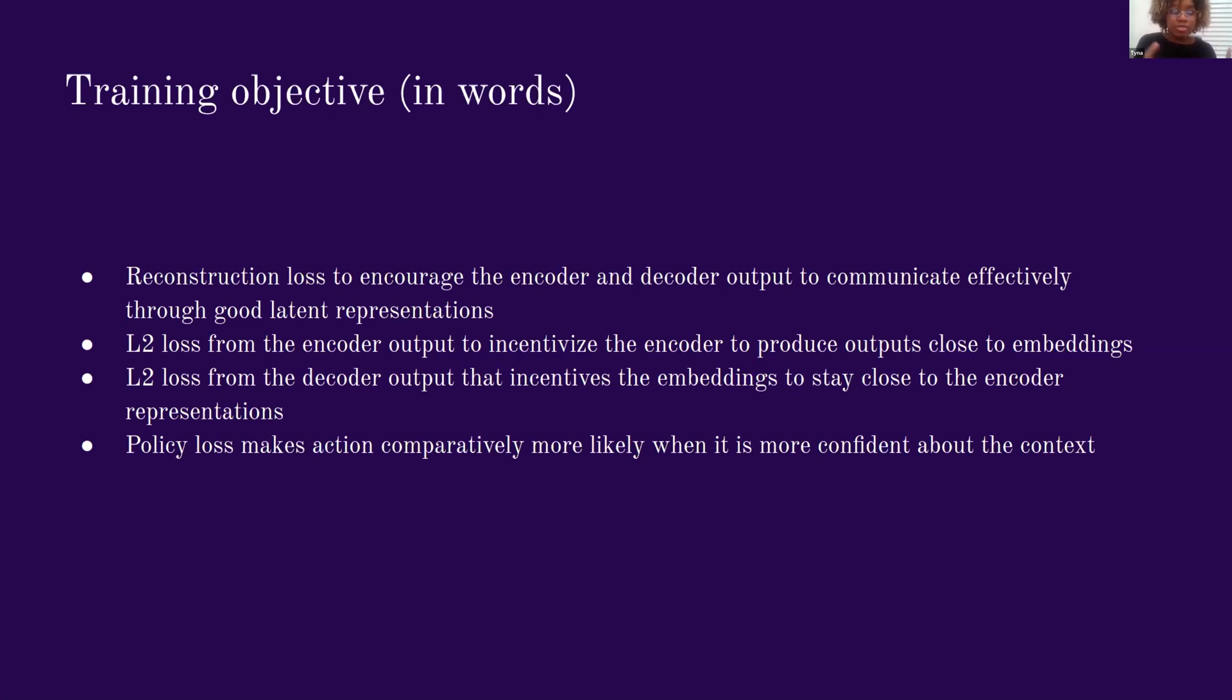Lastly, in the denominator, we had a policy loss, which makes actions comparatively more likely when the clustering algorithm is more confident about the context. And this dependency is reflected in the fact that these two models, the MLP and the VQVAE, train concurrently.